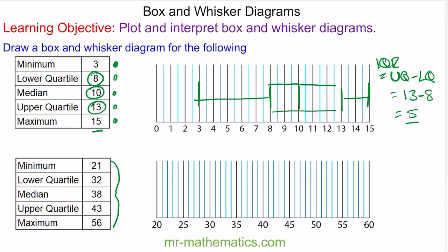Our minimum is at 21. The maximum is at 56. The lower quartile is at 32 and the upper quartile is at 43. So now we can create our box and whisker diagram. The median is at 38. The interquartile range is going to be the upper quartile, 43, minus the lower quartile, 32, which gives us 11.